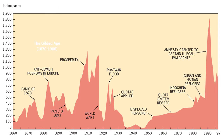This graph illustrates the waves of immigration from the Civil War until the end of the 20th century. The Panic of 1873 caused a severe drop in immigration, largely because there were no economic opportunities for immigrants. The next spike of immigration happened with the anti-Jewish pogroms in Europe, which pushed thousands of Jews to emigrate to the U.S. to escape the violence. Immigration drops again with the Panic of 1893, but will drastically increase after the turn of the 20th century, continuing until the outbreak of World War I.